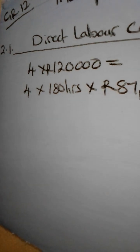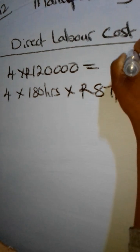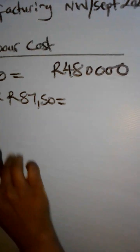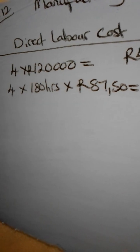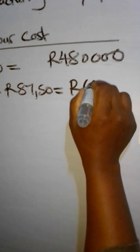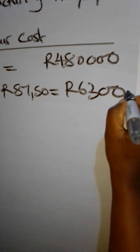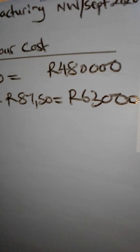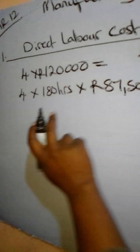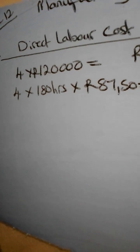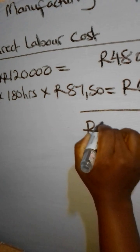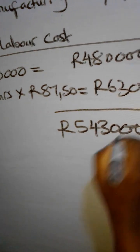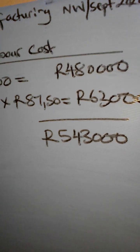Four employees times R120,000 gives us R480,000 for normal time wages. Four employees times 180 hours times R87.50 gives us R63,000 for overtime. Adding the two amounts together gives us R543,000, which is the direct labor cost so far.